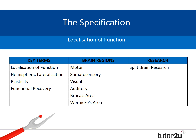If we display that as a table, there are four key terms: localisation of function, hemispheric lateralisation, plasticity and functional recovery. Then six brain regions: motor, somatosensory, visual, auditory areas, plus the two language centres — Broca's and Wernicke's. And then there's the split brain research. That's a lot to pack into one webinar, so I'm going to focus on localisation of function and the brain regions, and come back to the other areas in a future webinar.